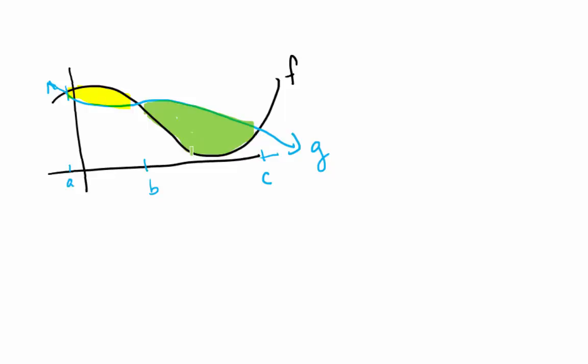So how would we set up a definite integral to find the yellow area? The integral from a to b of f of x minus g of x dx. That's the area in yellow.